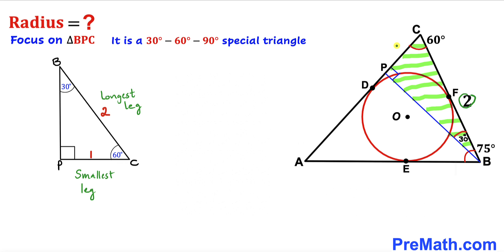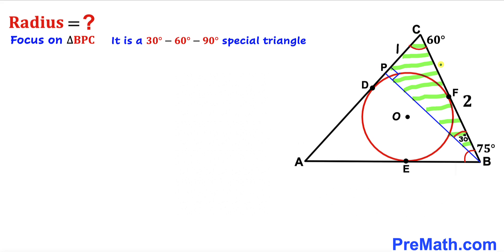So therefore our smallest leg PC is going to be 1 unit. In this right triangle BPC, side BC is 2 and side PC is 1. Let's go ahead and calculate the unknown side length BP using the Pythagorean theorem.